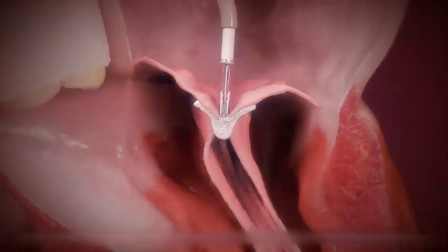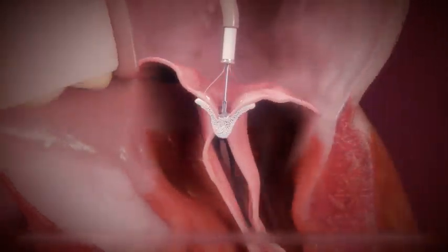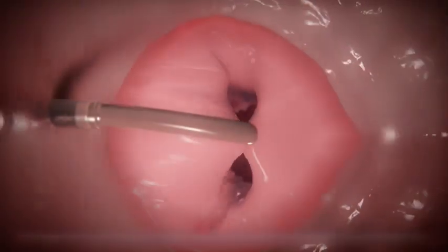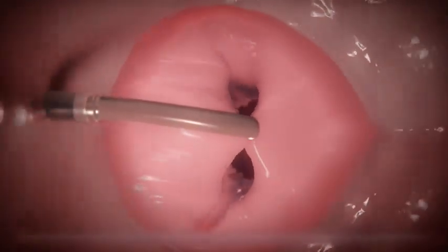MitraClip grippers are designed to drop firmly into the clip arms, securely capturing both leaflets. Once the arms are closed, they create a double orifice within the mitral valve.